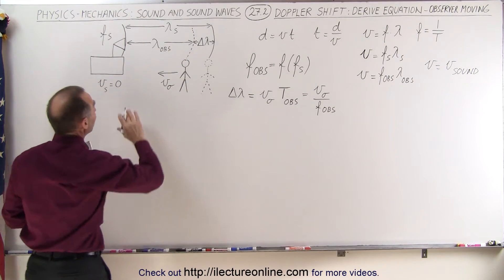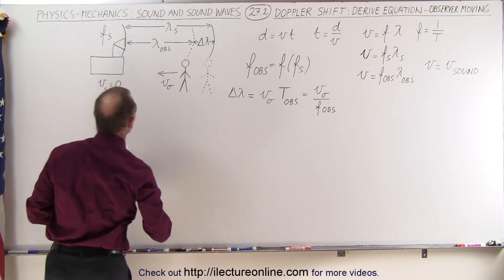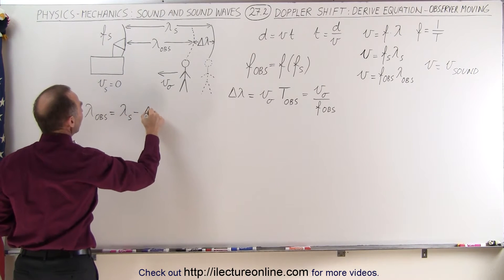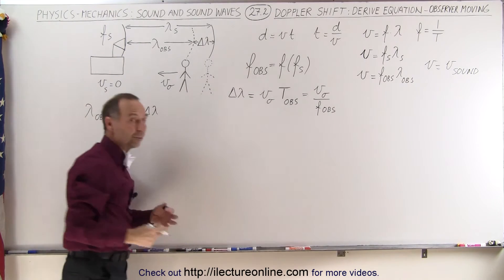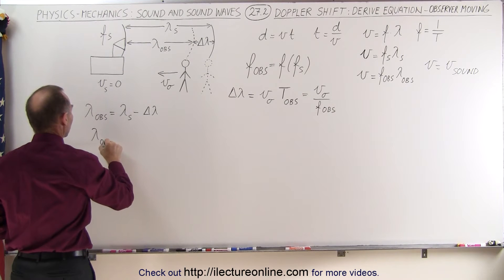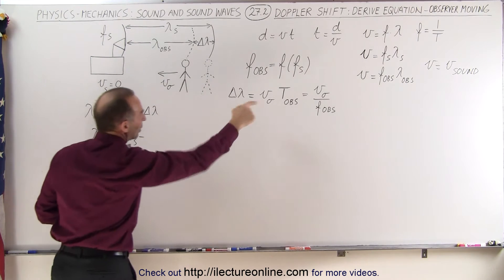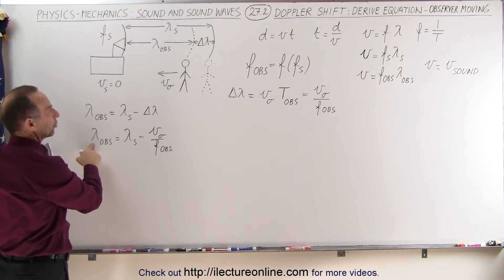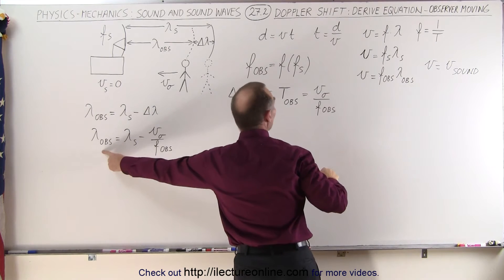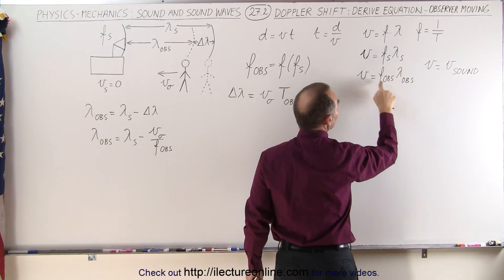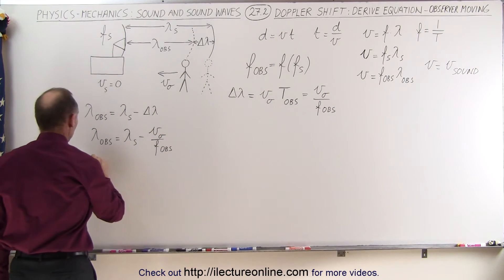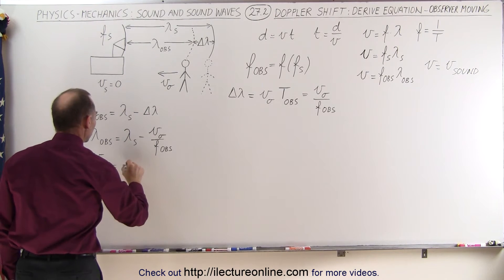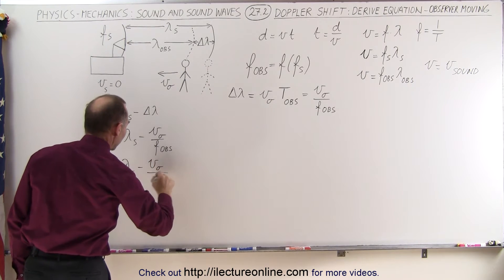Now we can use that in the equation relating the observed and source wavelengths. The wavelength observed equals the wavelength of the source minus the delta lambda, which we defined as v_observer divided by f_observed. Using the wave equation, the wavelength observed can also be written as the velocity of sound in air divided by the frequency observed. So: v_sound / f_observed = λ_source − v_observer / f_observed.